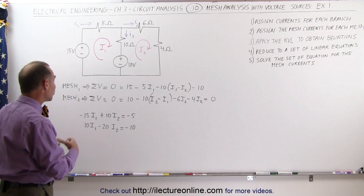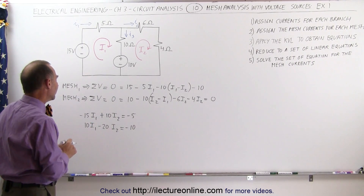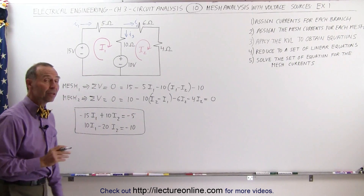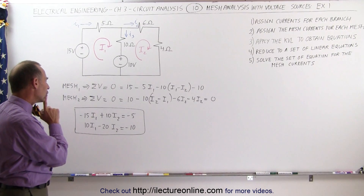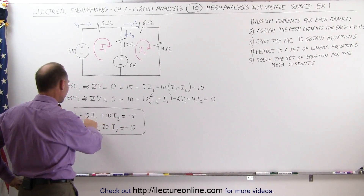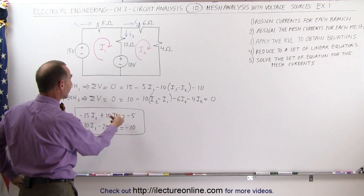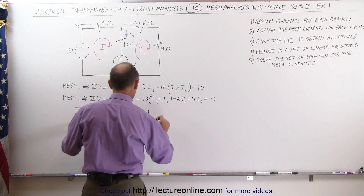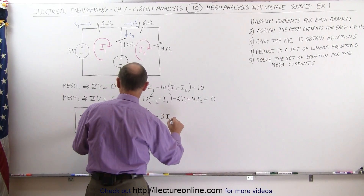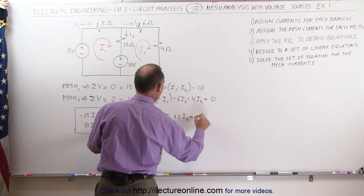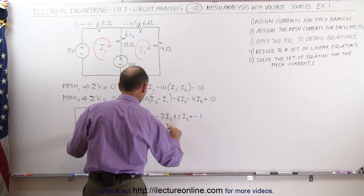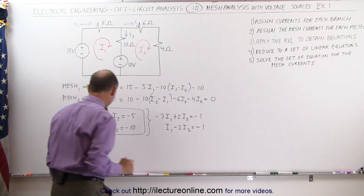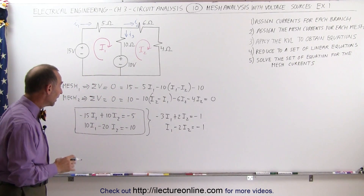It may look simpler if we change all the minus signs to plus and plus to minus, but it doesn't really matter — in the end you'll get the same result. We now have two equations and two unknowns. We can divide the first equation by 5 and the second by 10 to simplify: minus 3I1 plus 2I2 equals minus 1, and I1 minus 2I2 equals minus 1. So I divided the top equation by 5 and the bottom equation by 10.